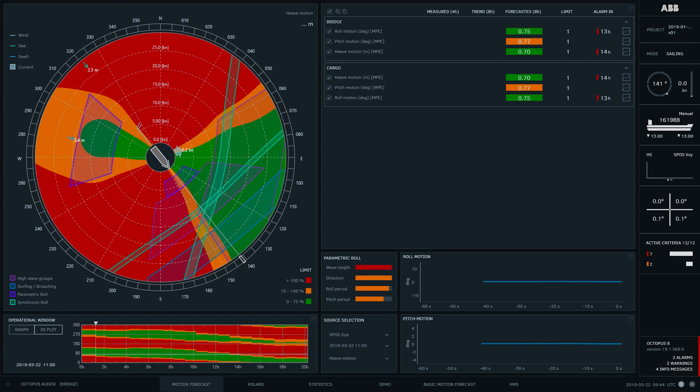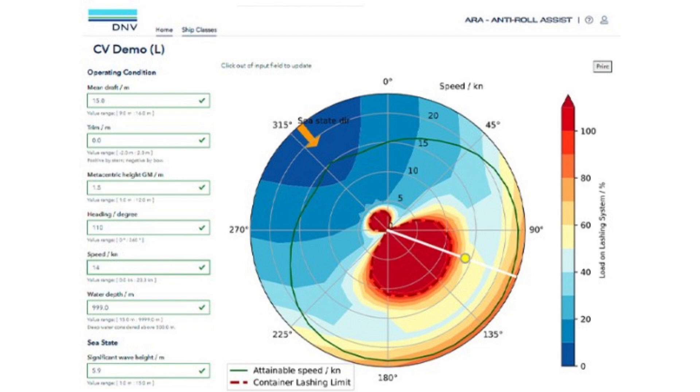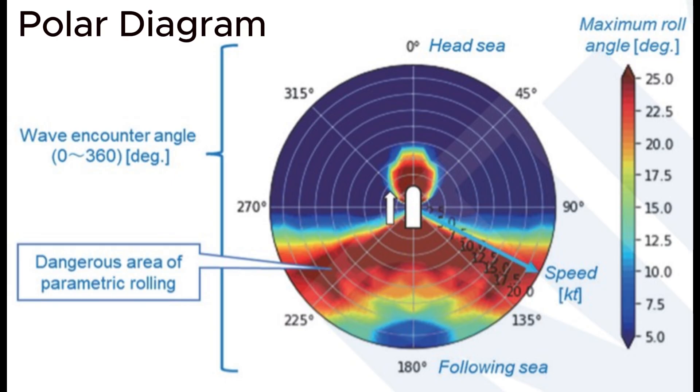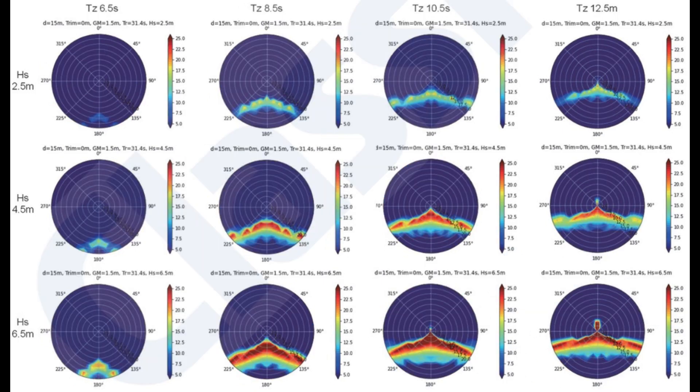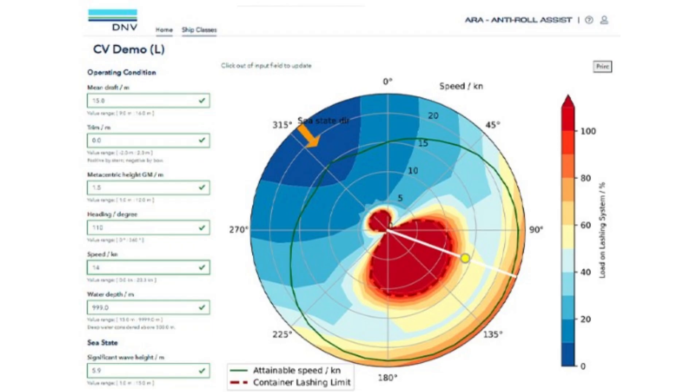Employing anti-roll assist software for both voyage planning and real-time decision-making. This kind of software assesses the probability of parametric rolling by analyzing environmental conditions and vessel-specific characteristics. It presents its output as a polar diagram illustrating danger zones based on ship's speed, heading, and prevailing sea conditions. By looking at the polar diagram, the captain can see whether the ship is operating in or near a risky situation and conclude whether changing the speed or course is the best option to avoid a roll risk. The anti-roll assist applications can be used as a standalone product or be integrated in other ship software systems.